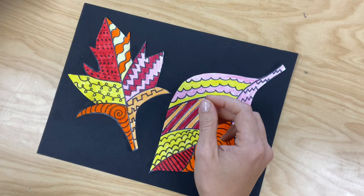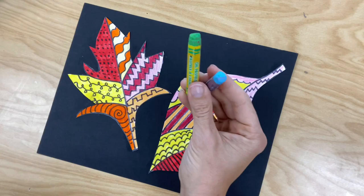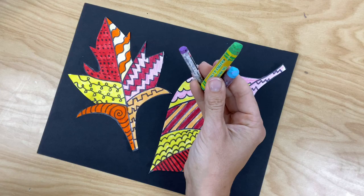And now we are going to be using cool colors in the background of our warm colored leaves. Again, reference the Google slide to learn about which colors are cool colors.